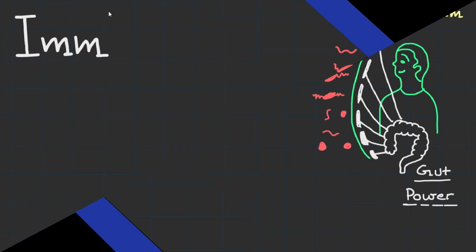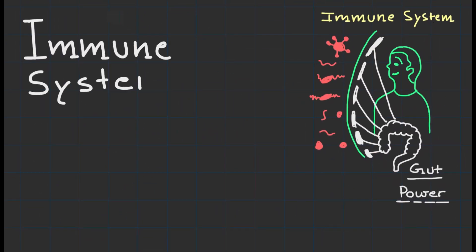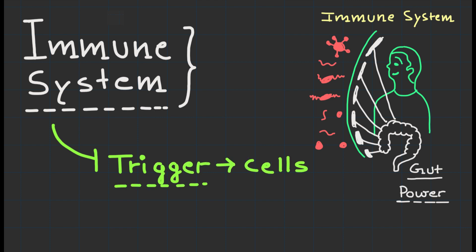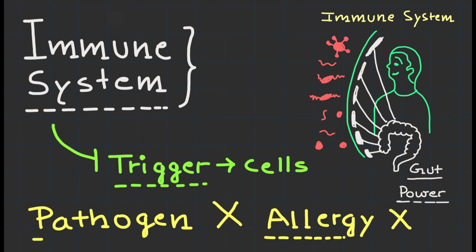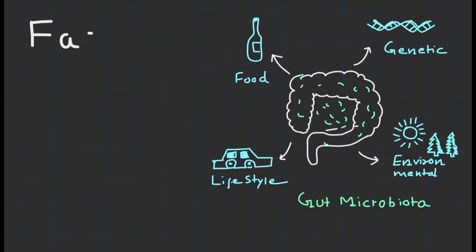Another critical role of the gut microbiota is in supporting our immune system. It helps train and regulate our immune cells, ensuring they respond appropriately to harmful pathogens while preventing unnecessary inflammation and allergic responses.